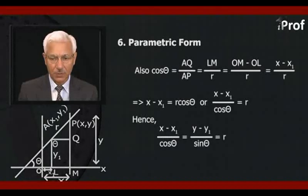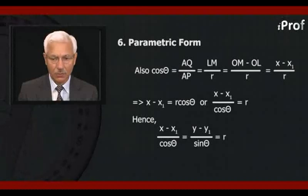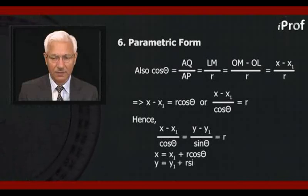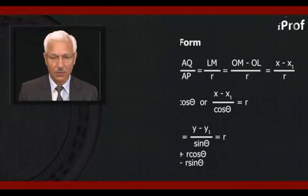Which is the equation in parametric form. So it can be written as x is equal to x1 plus R·cos theta, and y is equal to y1 plus R·sin theta, which is called parametric form or distance form.